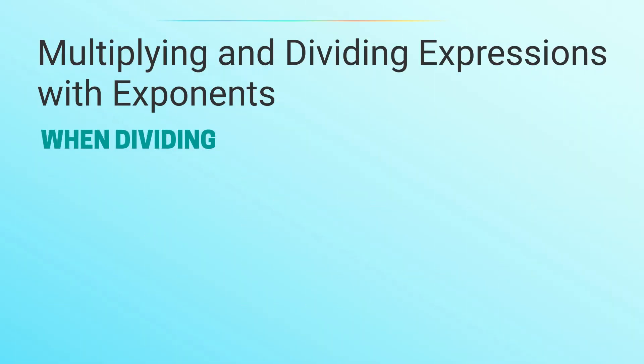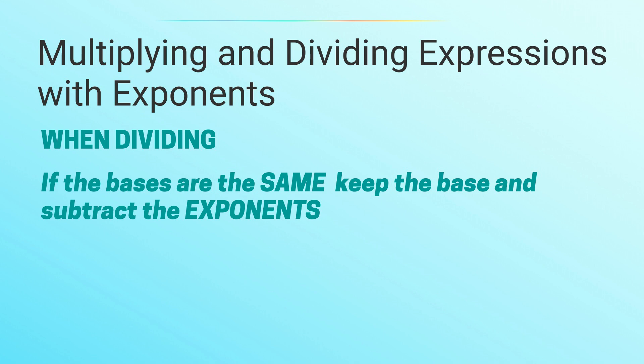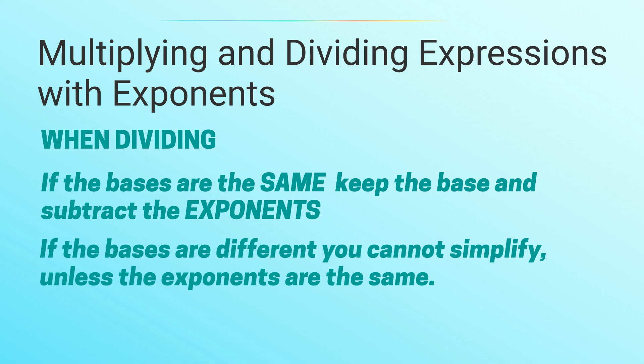In division, if the bases are the same, then you keep the base and subtract the exponents. If the bases are different, you can't simplify unless the exponents are the same, and in that case you divide the bases and keep the exponents.